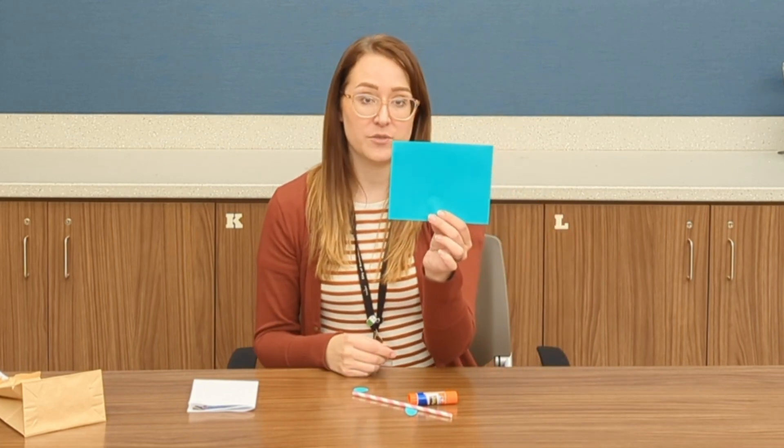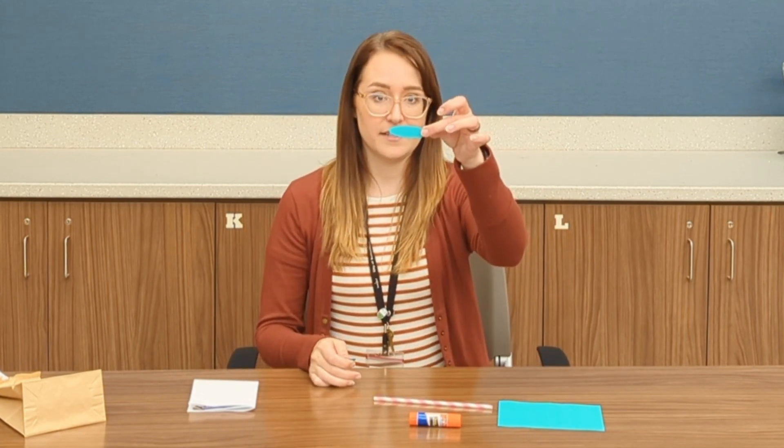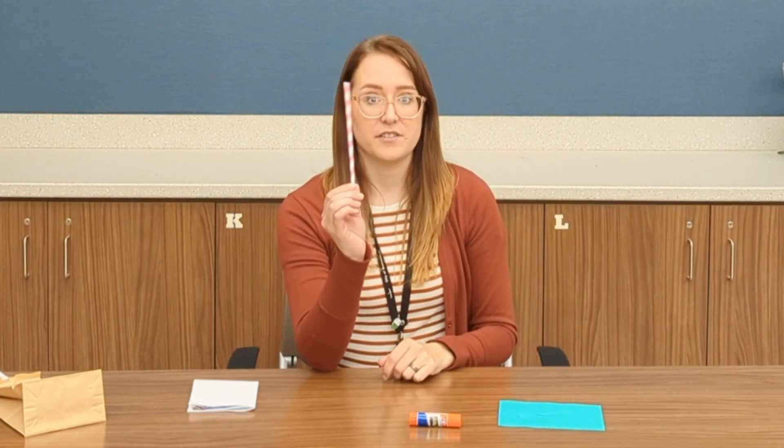I also have three different pieces of paper. One is rectangular, one is a small circle, and another is a very long oval shape. And of course I have a straw for my straw rocket and a glue stick.